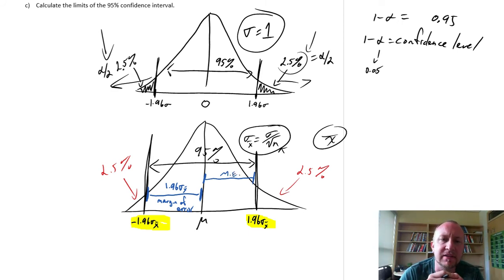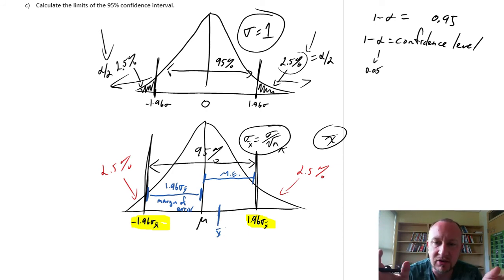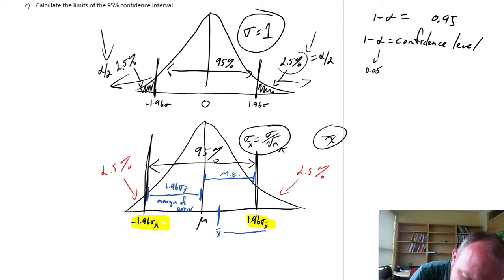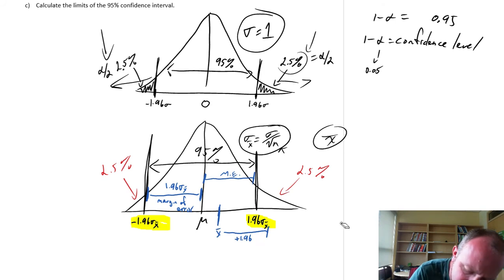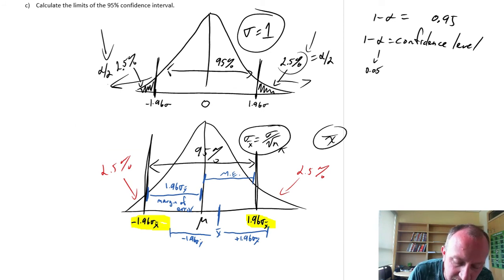Now I take a sample from that distribution of size n, and let's say that sample mean falls somewhere in the middle. If we add and subtract one margin of error — that is, plus 1.96 standard errors and minus 1.96 standard errors — we can see that interval includes the population mean.